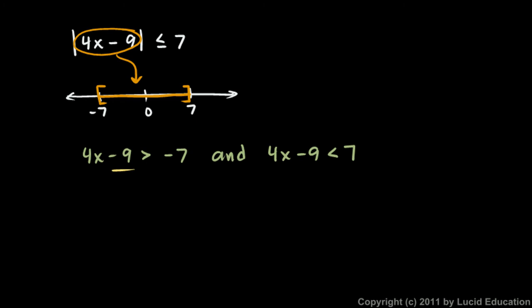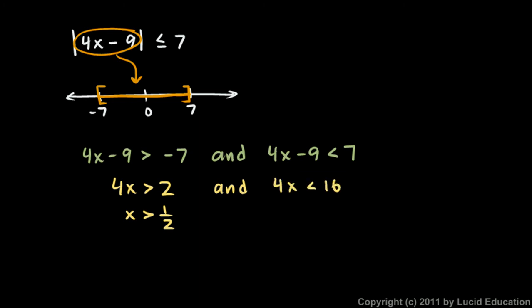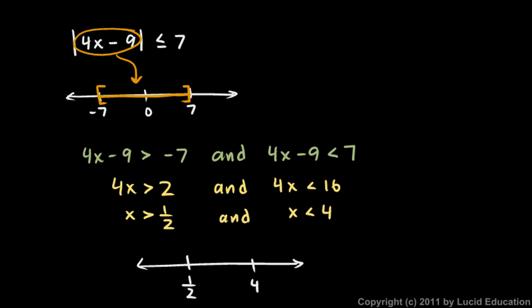Each of those can be solved. Add 9 to each side: 4x is greater than negative 7 plus 9, which is positive 2, then divide both sides by 4, so x is greater than 1 half. And over here, add 9 to each side and we get 4x is less than 16, then divide both sides by 4 and we get x is less than 4. Actually, all those inequalities through there should be greater than or equal to, so let me fix those.